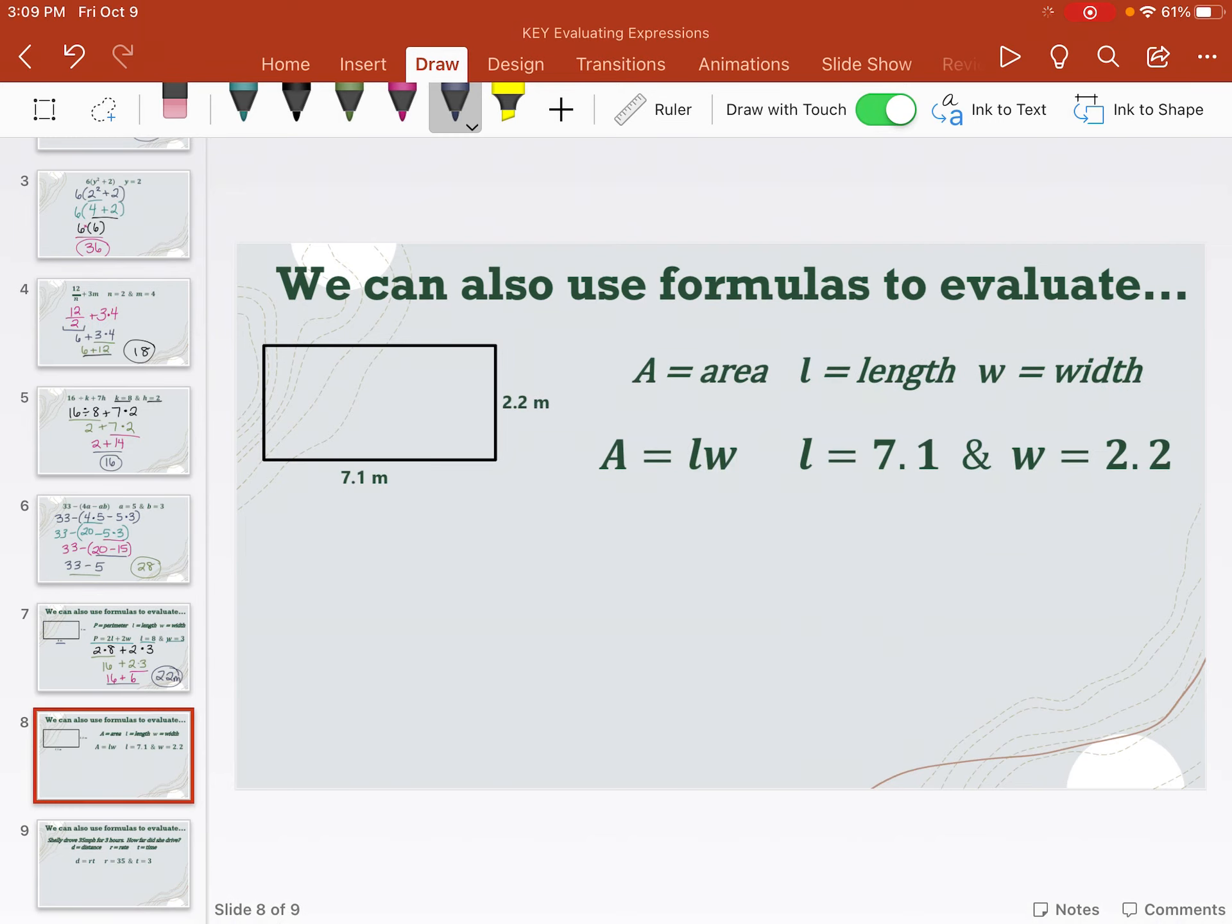Okay, so for slide 8, it's the same idea. This time we're just talking about area. So there's our formula. Area equals length times width. Again, it doesn't matter if you know that yet. We're not in our geometry unit yet. So all it really says is L times W. They told you the L. They told you the W. So substitute this in. L was 7.1 times W, which was 2.2. Go ahead and do that multiplication off to the side, and let's see what you get.